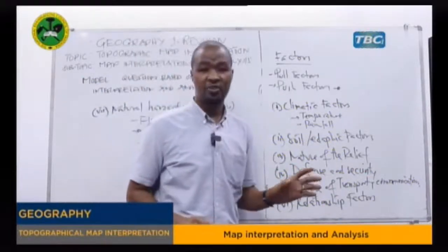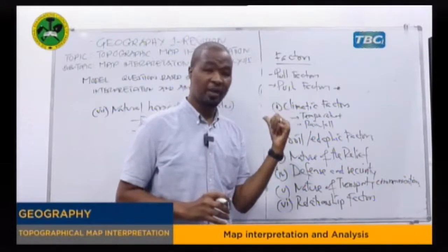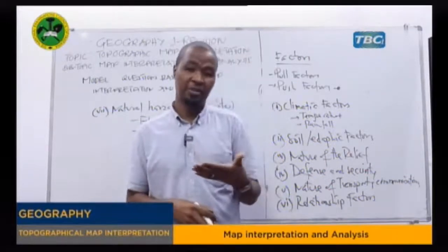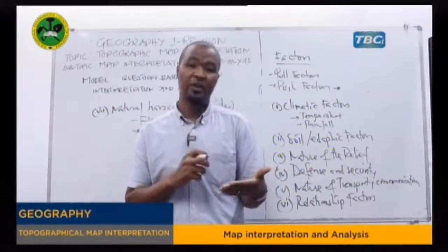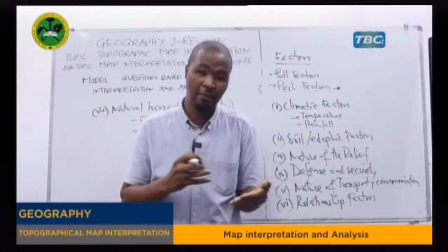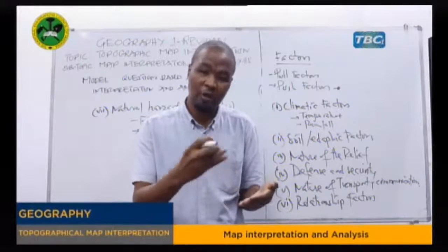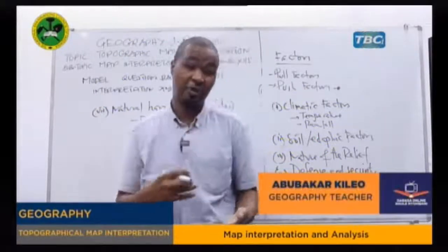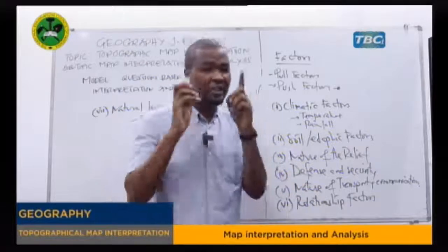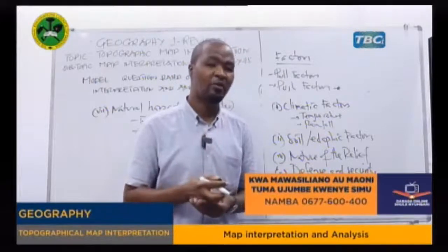In summary, when answering map questions in class, remember to cite and show references from your map sheet. For example, indicate the eastern part of your map, the northern part, or the central part. Point to specific areas to support your answers about soil, vegetation, or settlement. It is very important to cite references when answering questions in map reading and interpretation. Until next time.